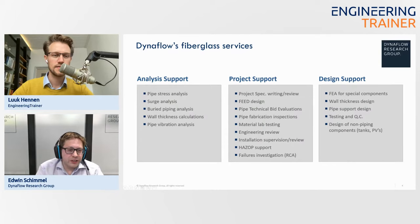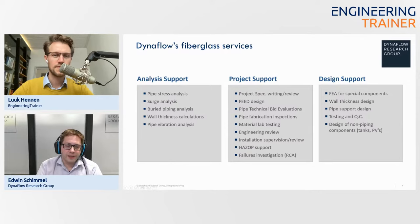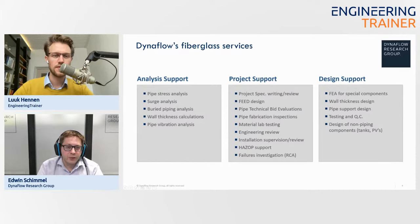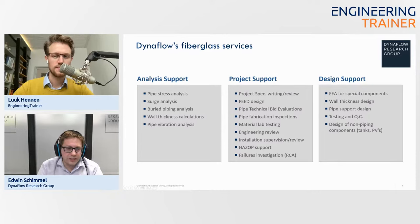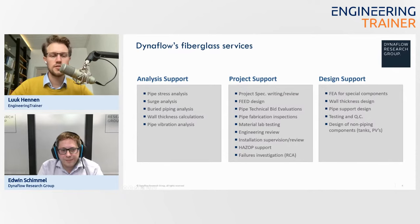Regarding fabrication inspections — fiberglass is a laminate, so there are more aspects that play a role compared to steel piping. You have different raw materials, and bringing them together in a laminate has more aspects requiring attention, more things that can affect quality. We look at raw materials, production machines and tools, QC, traceability, and also the fabrication of fittings — it's quite a broad activity.